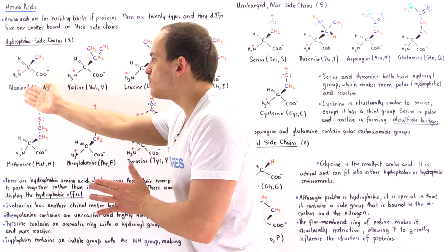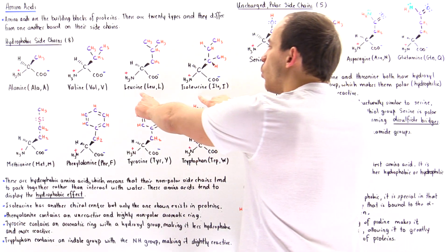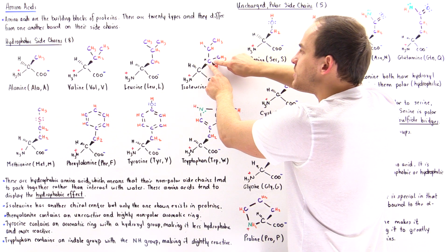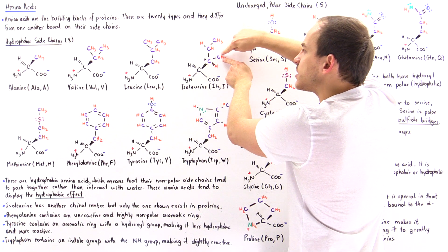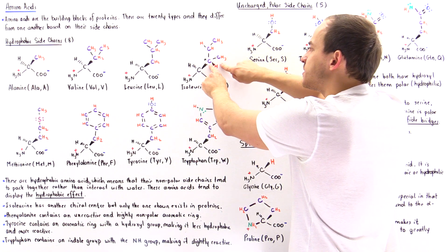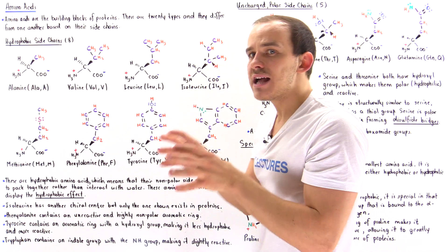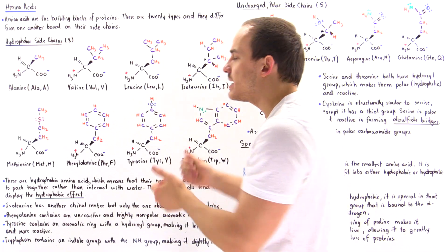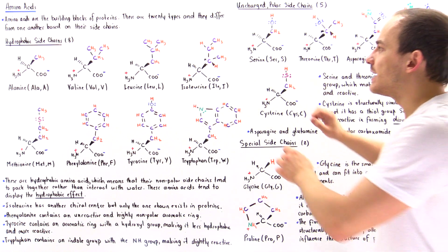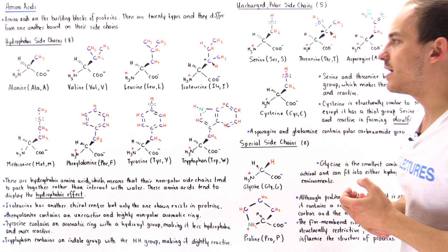What distinguishes leucine from isoleucine is that a specific carbon in isoleucine contains a methyl group, making that carbon a chiral carbon. This means isoleucine has a mirror image — an enantiomer. Inside the proteins of our body, this is the only enantiomer of isoleucine that we actually find, when the H atom is coming out of the board as shown in the diagram.